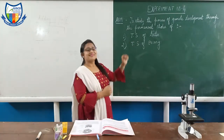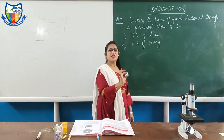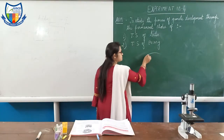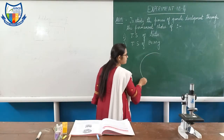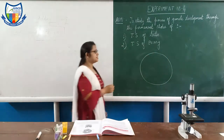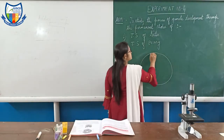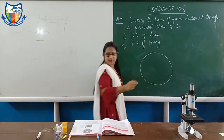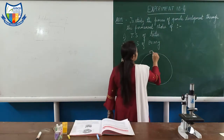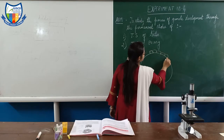Now let us see the transverse section of testis. This transverse section of testis is basically made up of three layers. The outermost layer comprises of the germinal epithelium, surrounded by germinal epithelium.